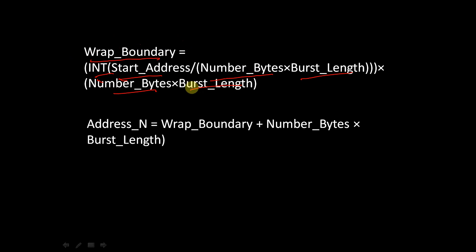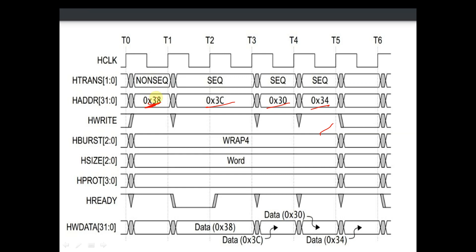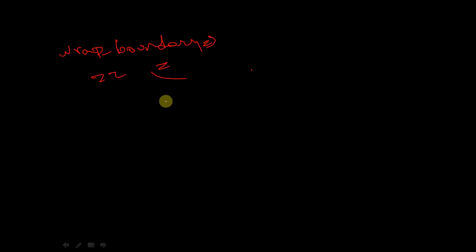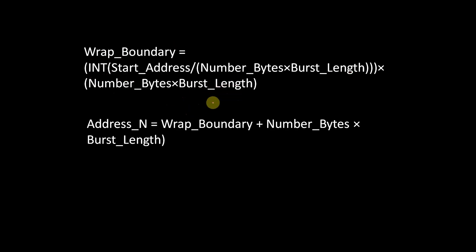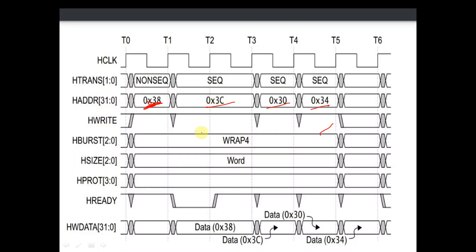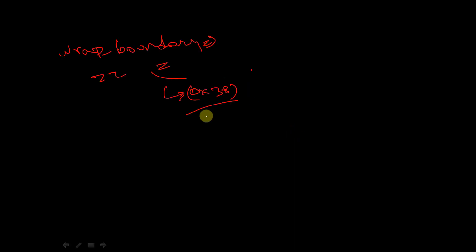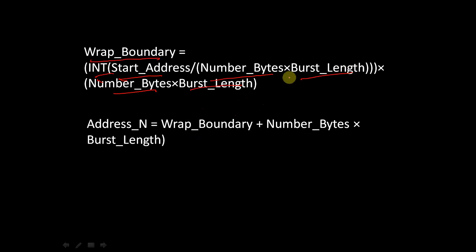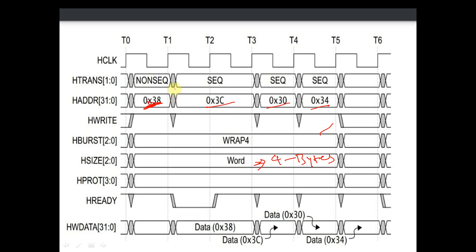So the formula for wrap boundary is: int(start_address divided by number_of_bytes into burst_length). In our case, start address is hexadecimal 38. Hexadecimal 38 divided by number of bytes — here the size of the data is word, which means 4 bytes. Into burst length — this is an example for wrap 4, so the burst length is 4.